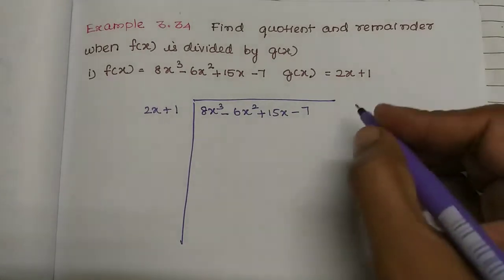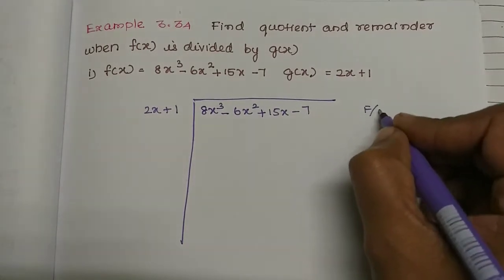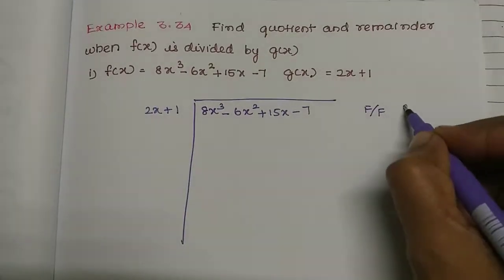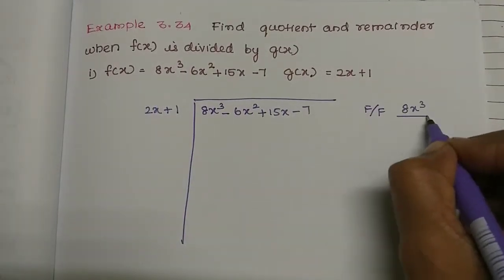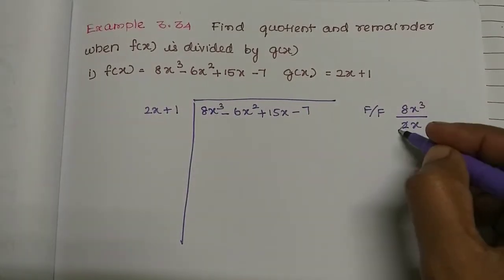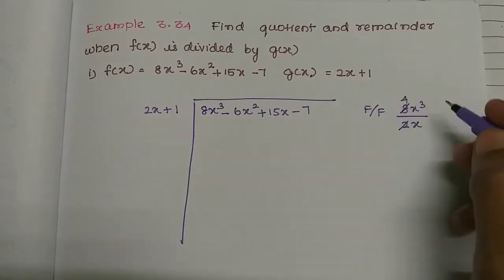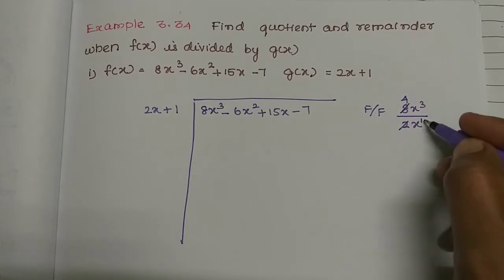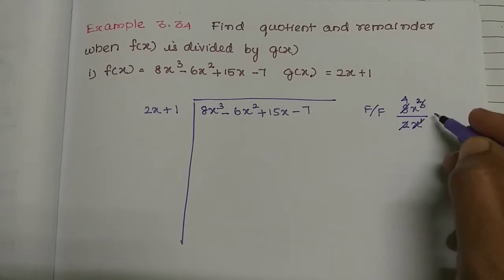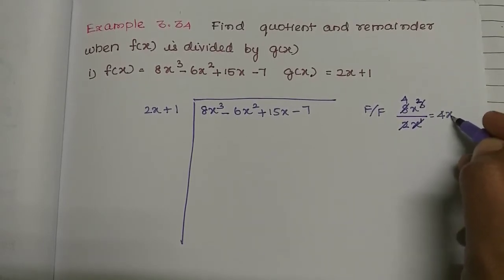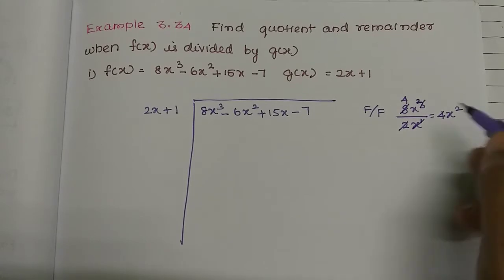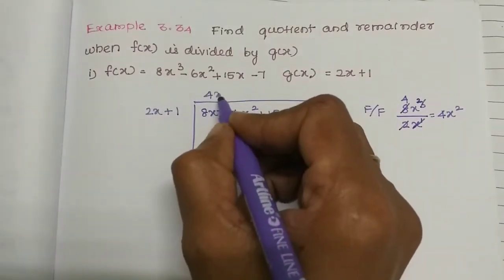The first step is: first term divided by first term. The first term is 8x cube divided by 2x. So 2 fours are 8, and here is 1x, so in the power 3x, 1x is remaining — that gives 2. So the answer is 4x squared. This is the quotient term.